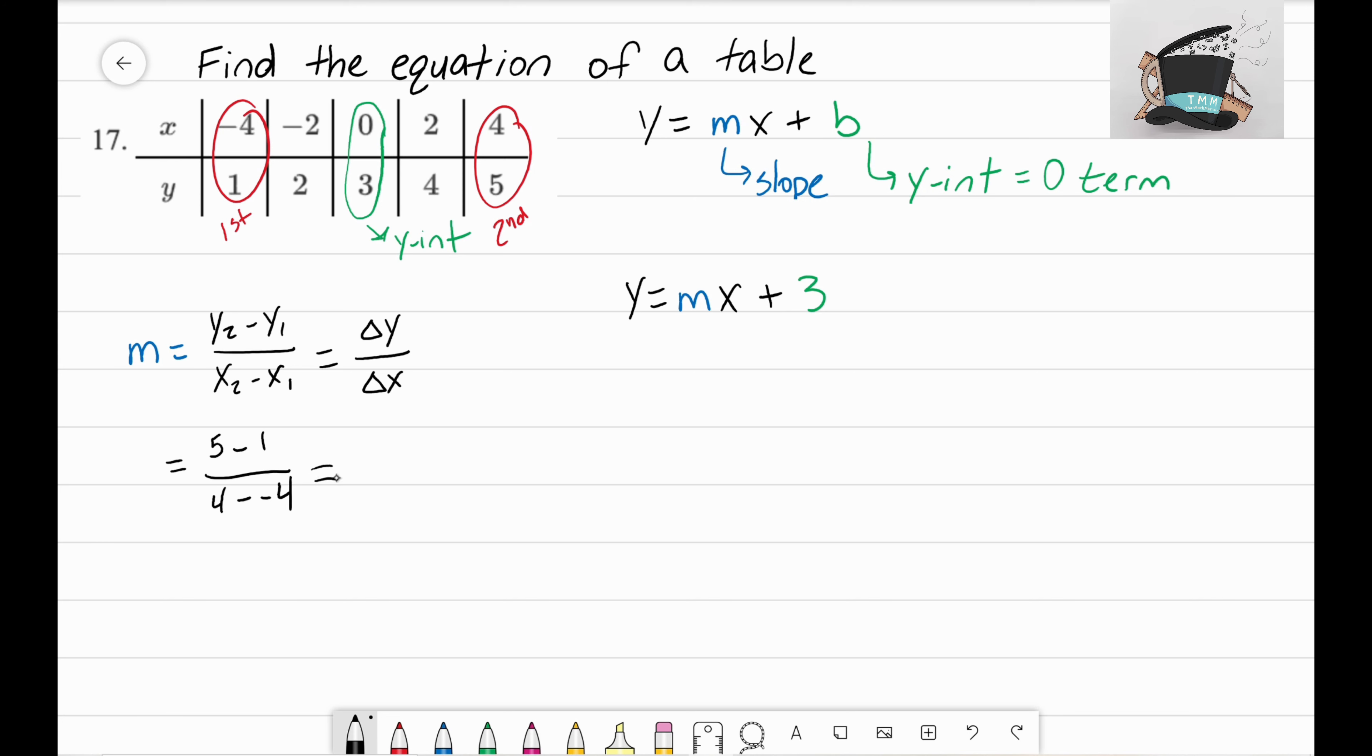Our next step is to simplify our numerator and denominator. 5 minus 1 gives me 4. Here we have 4 minus negative 4. When you subtract a negative, that ends up just adding those two numbers together, so it really is just 4 plus 4 which is 8. Our final step is to reduce 4 over 8, which reduces to one half. So our slope is one half.